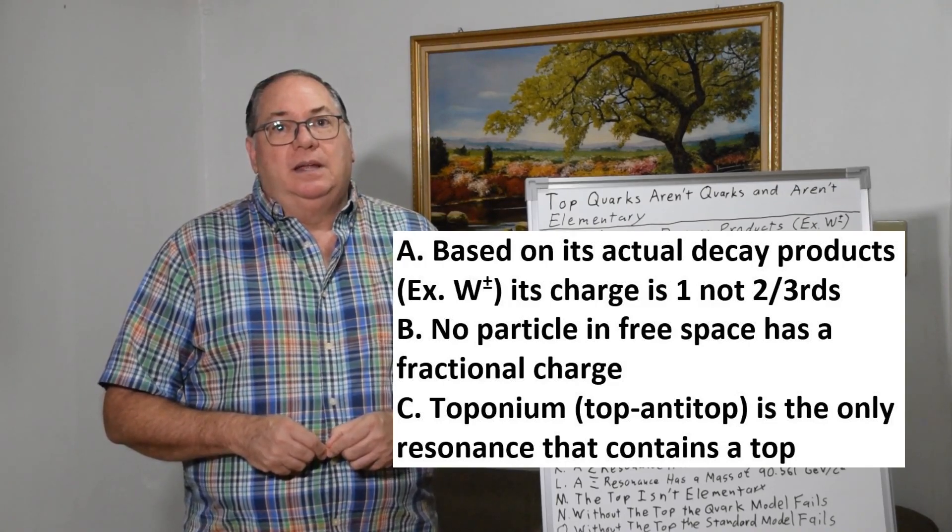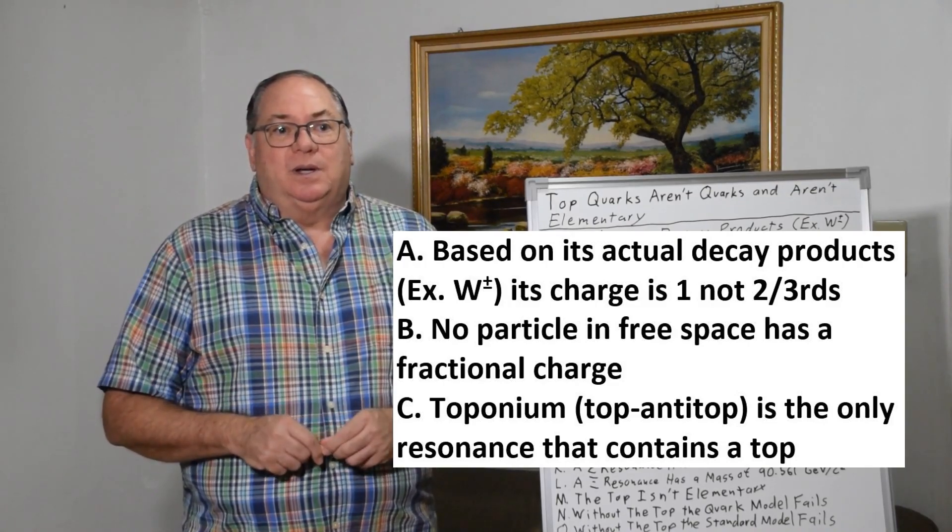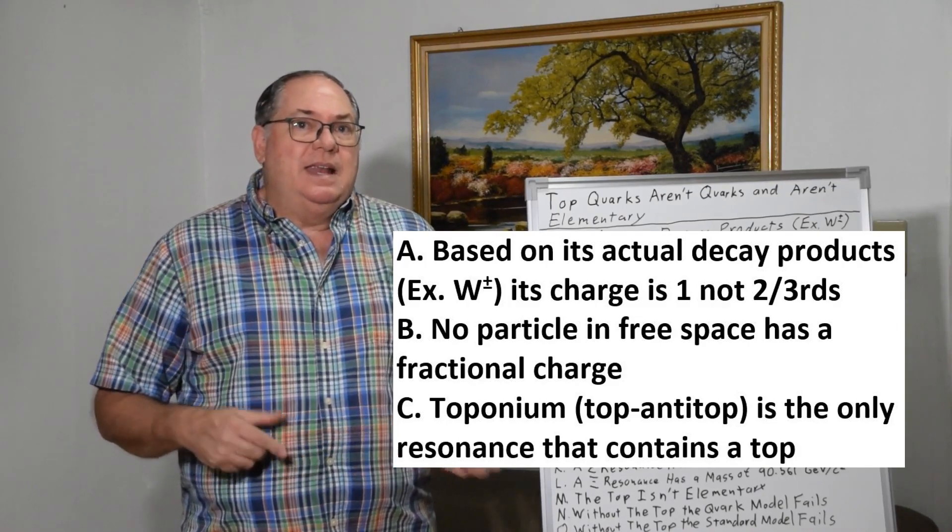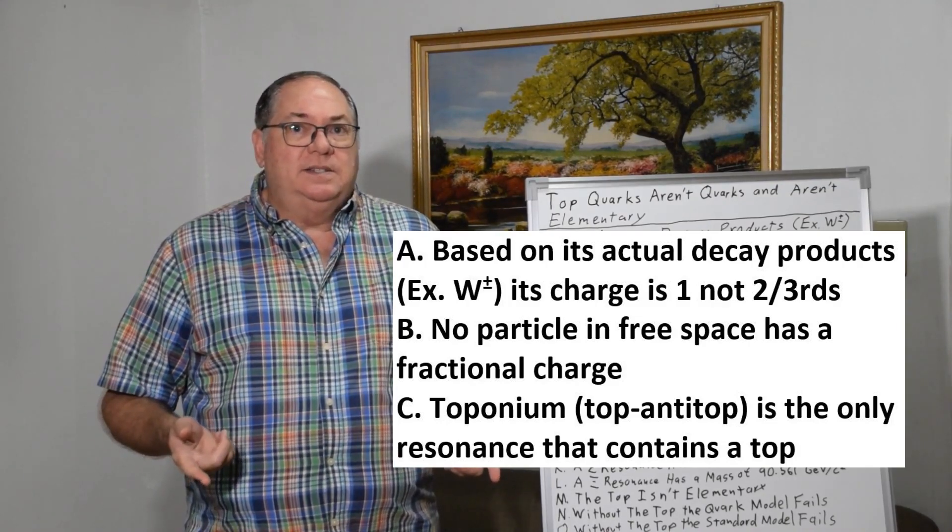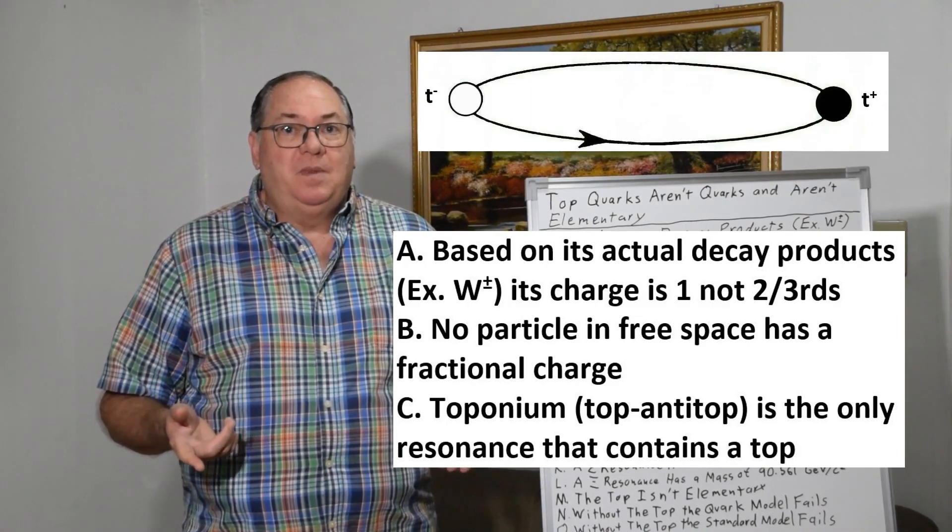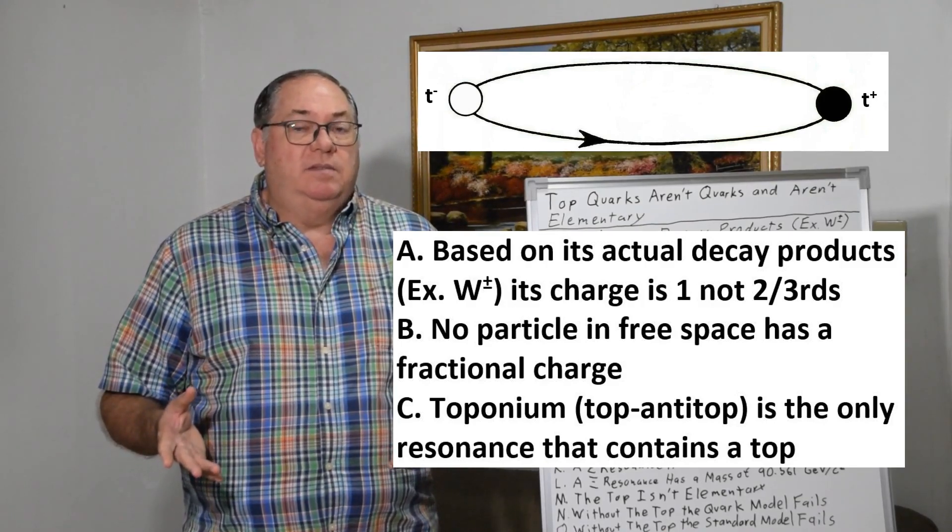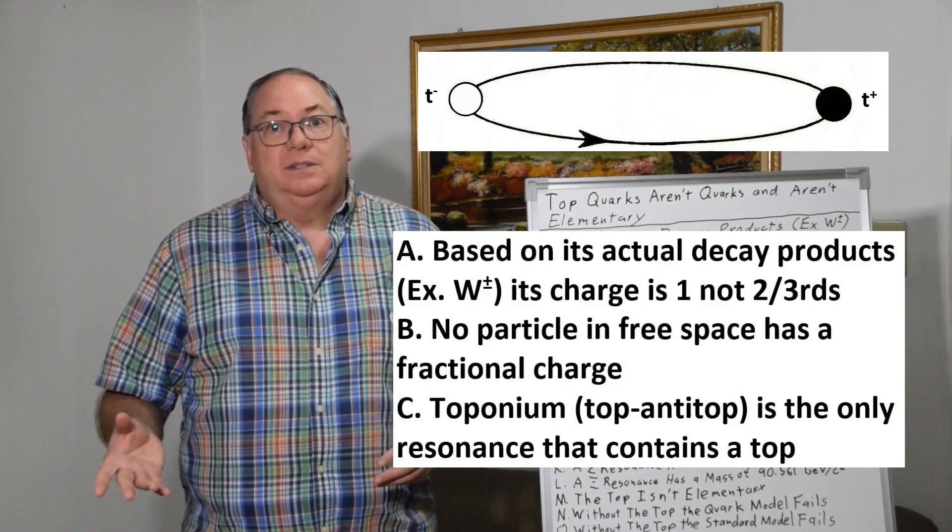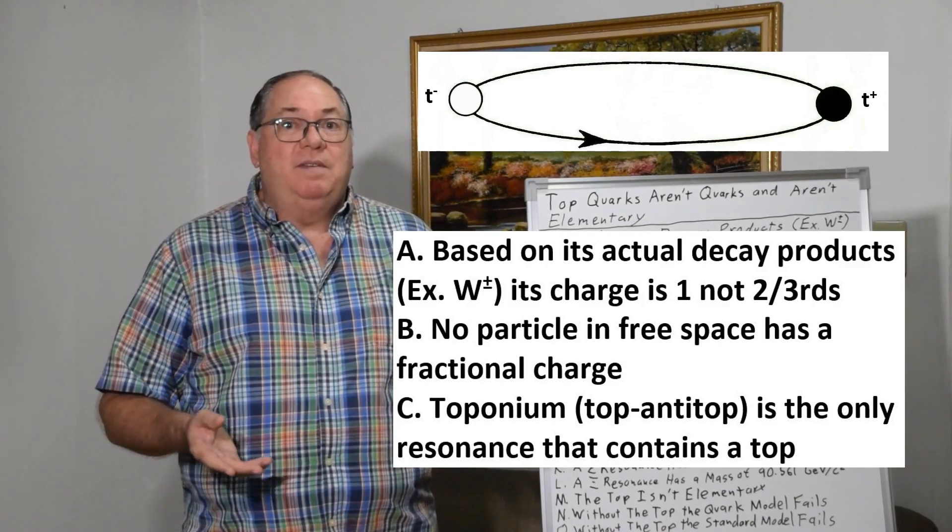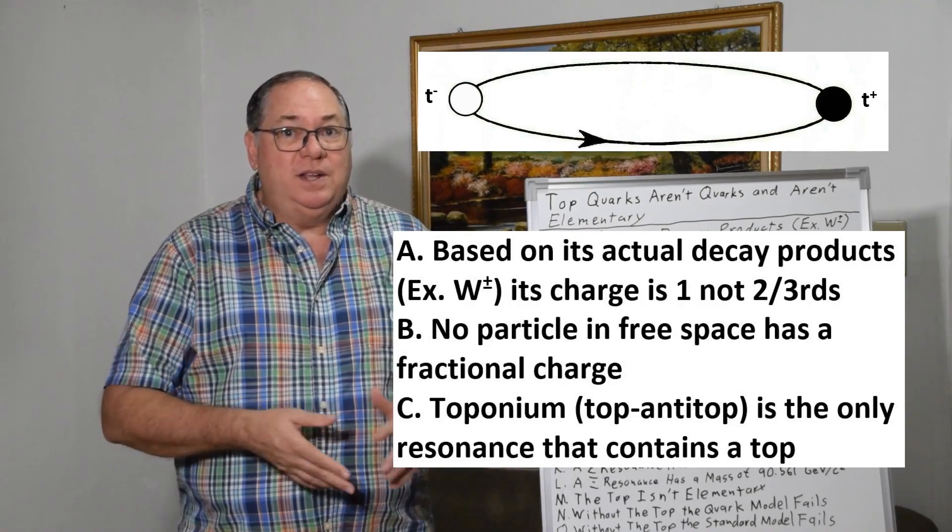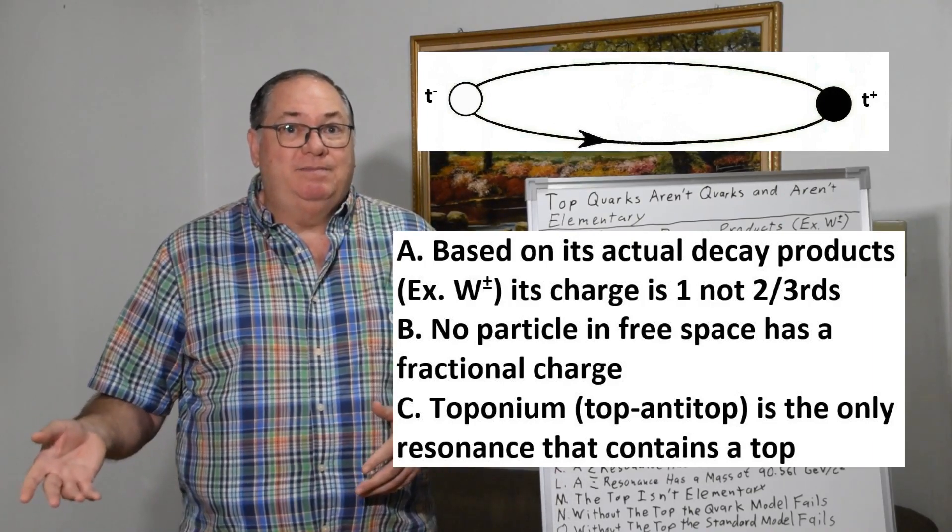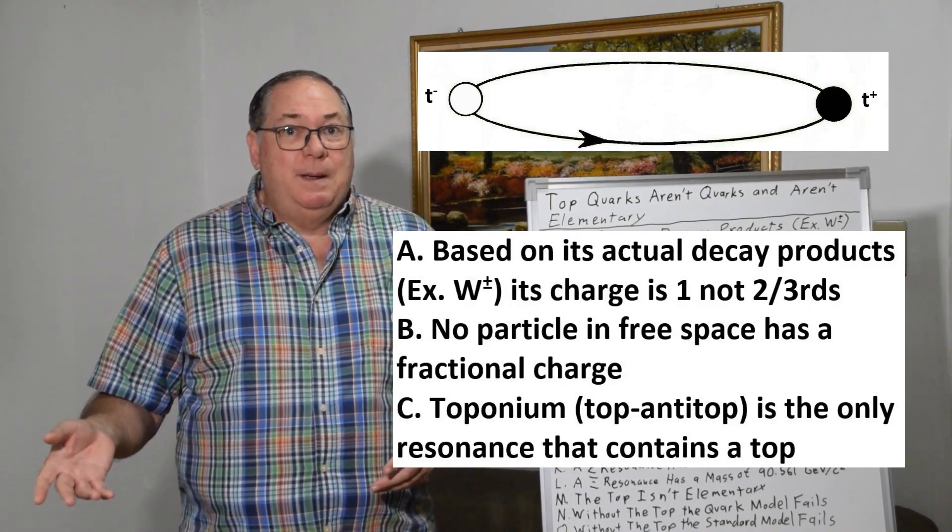Now another important thing is toponium, a top and an anti-top, are the only compound that we know of that are made of top quarks. And the whole point of having the top quarks is that all these resonances are supposed to be made of the quarks, and nothing's made of the top quark except its own onium resonance.